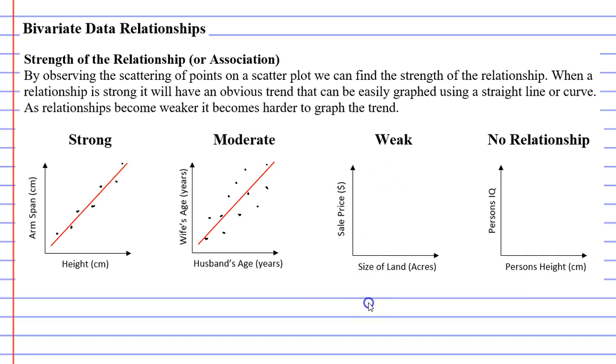Let's now look at something with a weak relationship. Here's our line of best fit. We're comparing the size of land to the sale price. So obviously, as the size of the land increases, the sale price usually increases with it. So you're going to get your points that follow the trend quite nicely, but we're also going to get some that veer away from this.